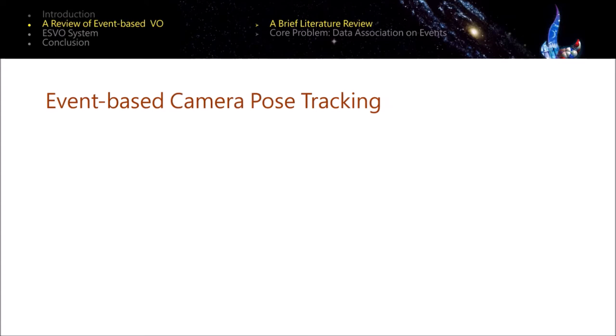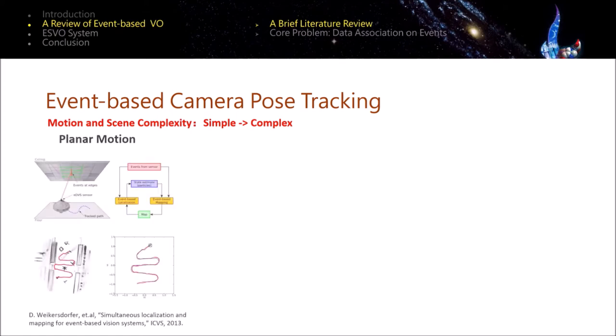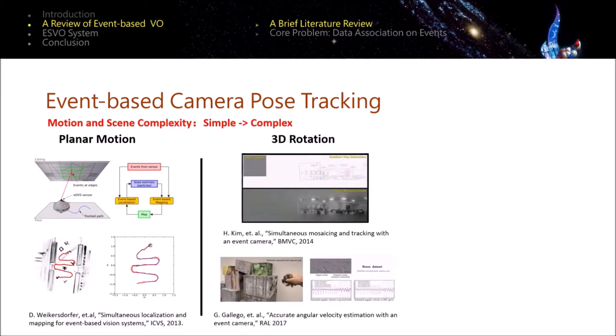Now let's switch to the second sub-problem, event-based camera pose tracking. Increasing complexity in terms of motion patterns and scene geometry is witnessed in the research of this problem. Early works addressed the planar motion estimation problem by observing predefined two-dimensional geometric primitives. Things become more complicated when dealing with three-dimensional rotation in a natural scene.